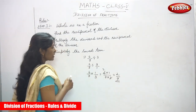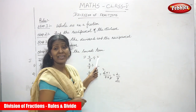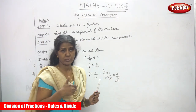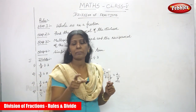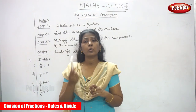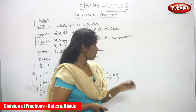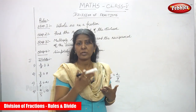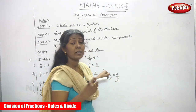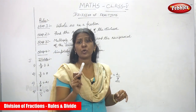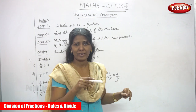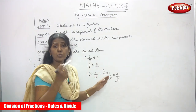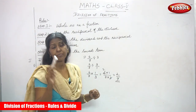Let me repeat the sum: 6/7 divided by 3. Here 6/7 is a fraction and 3 is a whole number. Step 1: convert the whole number 3 as a fraction — 3/1, since there is no denominator, we consider 1 as the denominator. Now 3/1 becomes a fraction.